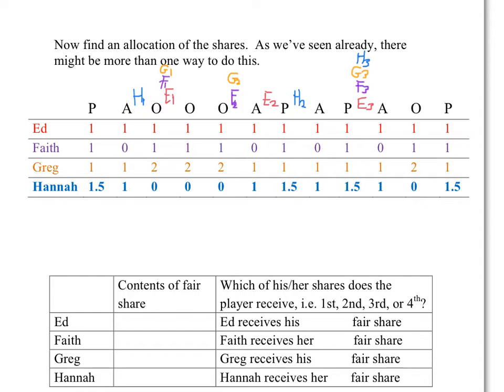We scan from left to right until somebody's number 1 marker appears before any other player's number 1 marker. Hannah has the honor of being the player whose number 1 marker appears first. So Hannah will get her first fair share, and that's this pear and apple. We can record that here. She will get a pear and an apple, and that is her first fair share.